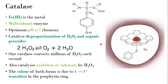Catalase has Fe as a metal where Fe is in its +3 oxidation state and it is surrounded by the porphyrin part. When iron is the metal surrounded by the porphyrin, we can call it a heme group. Catalase contains a heme group and this entire porphyrin is surrounded by the protein part.